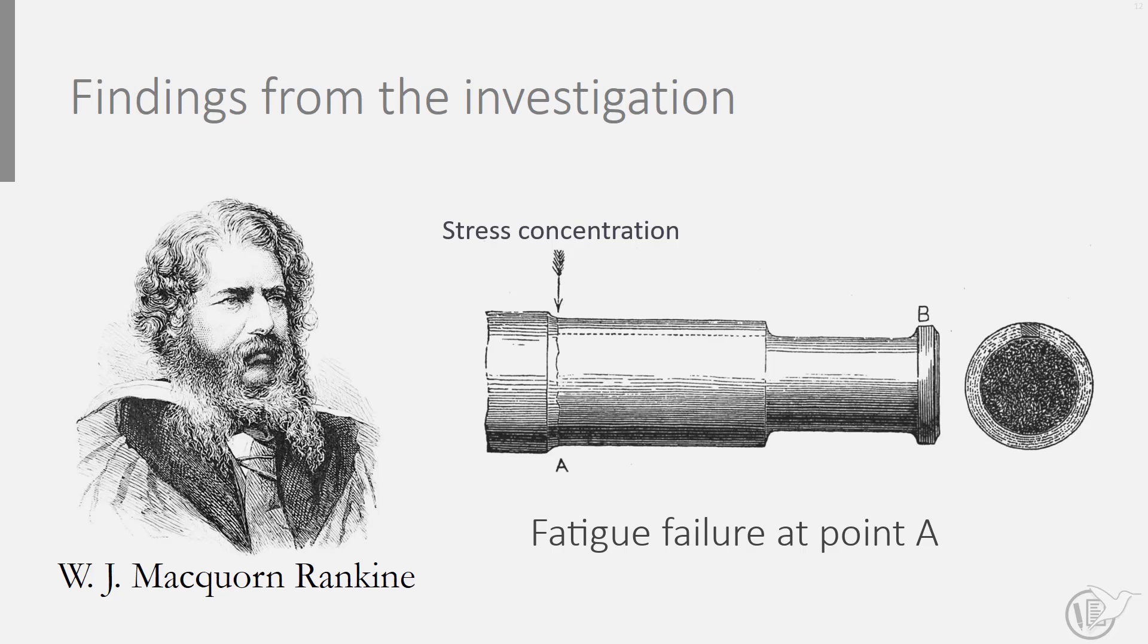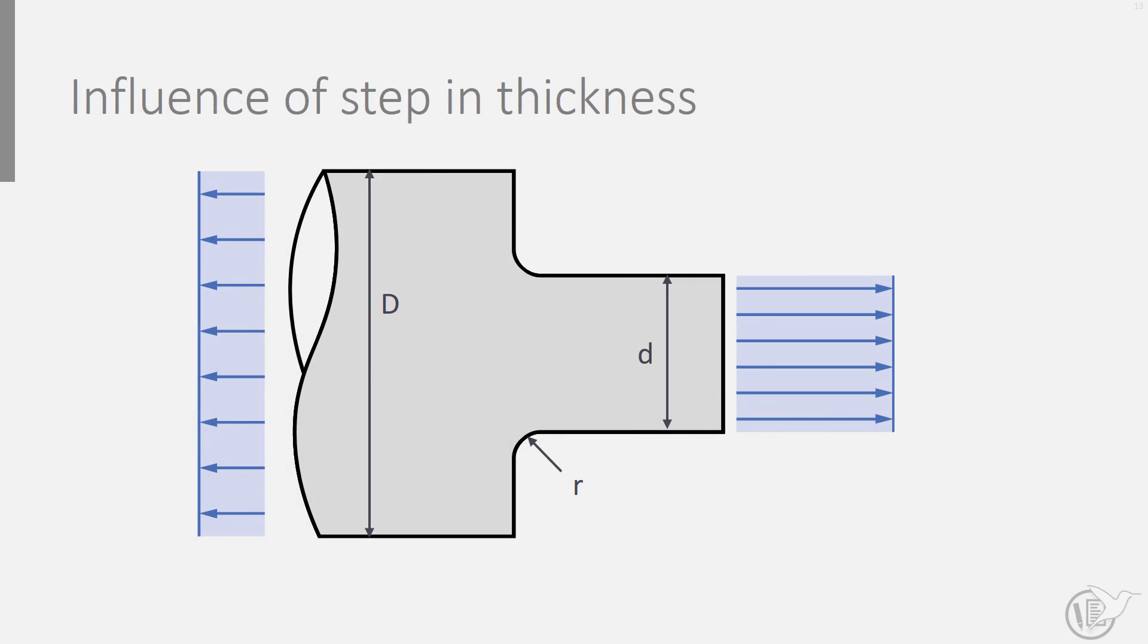This concentration of stress was present at transitions in the axle diameters. We can understand that when looking at this illustration. Obviously this is not the load condition of the train front axle, but it makes the concept of stress concentration clear. Away from any transition in diameter, the stress is homogeneously distributed in the train axle. Near the transition, however, the stress redistributes from one homogeneous stress distribution to the other.